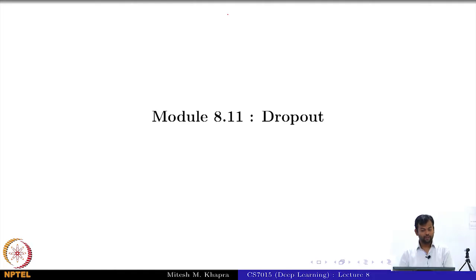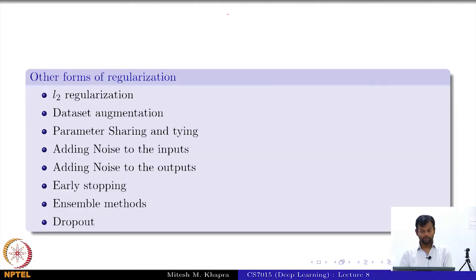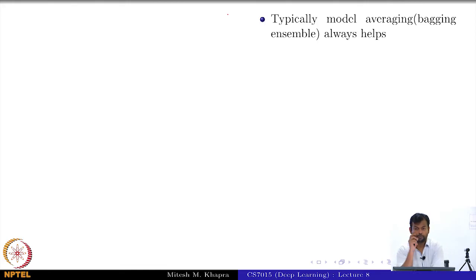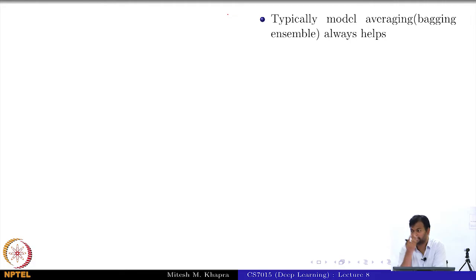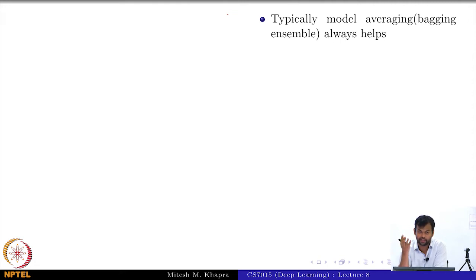In this module we look at dropout. The intuition developed in the previous module on ensemble methods is that ensembles make sense in most cases because you do not expect the errors of these K models to be perfectly correlated, and whenever they are not perfectly correlated you are going to get some advantage.